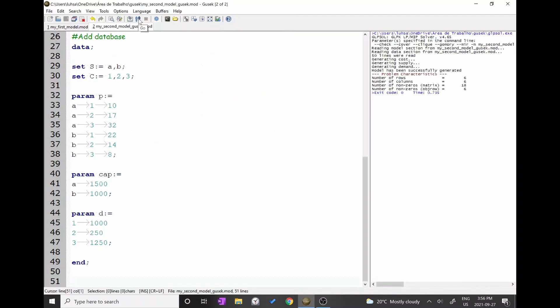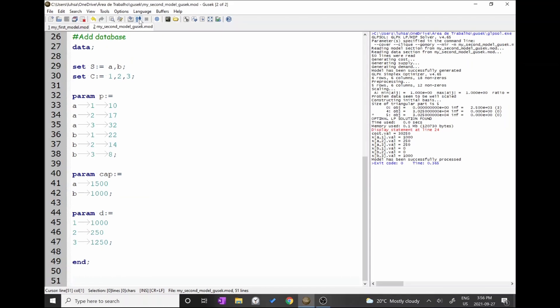The result is displayed after the red statement. As expected, we got the same result as when we hardcoded the model. Notice that now we have an advantage. Every time we run a transportation model, we can use this code and just fix the values in the data section.